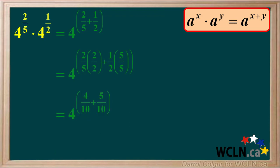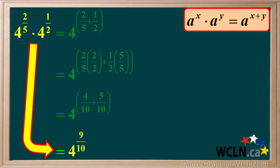So, 4 to the 2 fifths times 4 to the 1 half is equal to 4 to the power of 9 tenths. We can leave the answer in this form.